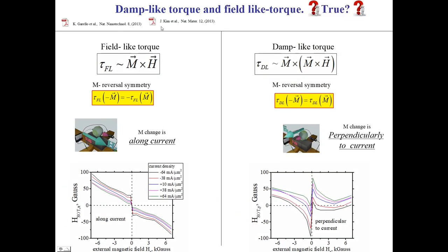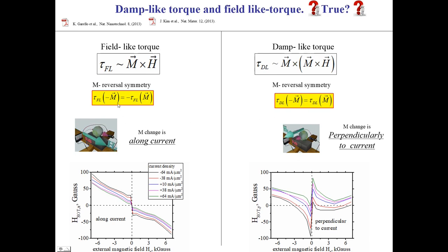In two publications, it was suggested that the SOT magnetic field can be divided into two independent components: the field-like torque and the damp-like torque. Using the high-precision measurement, the correctness of this suggestion can be verified. The suggestion is based on the symmetry of the second harmonic data with respect to magnetization reversal. The measured second harmonic component along the current reverses its sign when the magnetization is reversed; therefore, it was assigned to the field-like torque, which is linearly proportional to the magnetization.